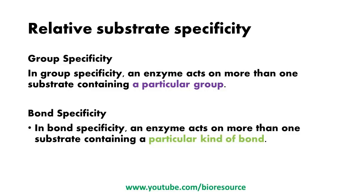There are two types of relative substrate specificity: group specificity and bond specificity. In group specificity, an enzyme acts on more than one substrate containing a particular chemical group. In bond specificity, the enzyme acts on more than one substrate containing a particular kind of bond. The example for group specificity is chymotrypsin, which hydrolyzes peptide bonds attached to aromatic amino acids, and trypsin, which hydrolyzes peptide linkages involving arginine or lysine. The example for bond specificity is salivary alpha-amylase, which cleaves the glycosidic bonds of carbohydrates, while lipase hydrolyzes the ester bonds of lipids.